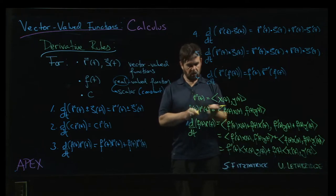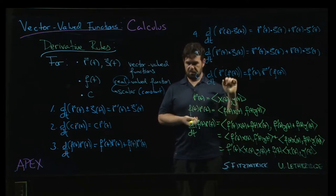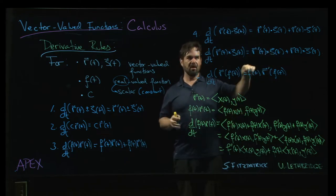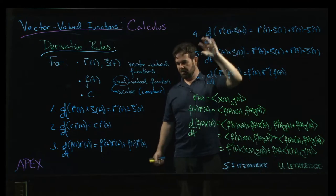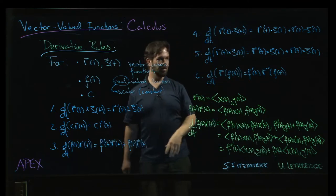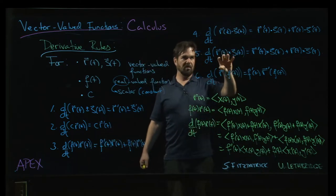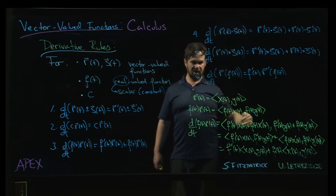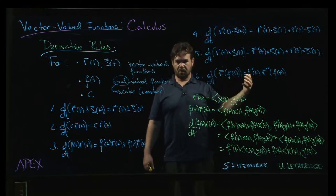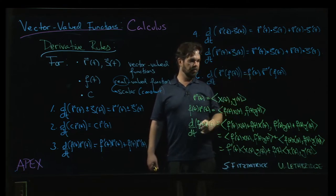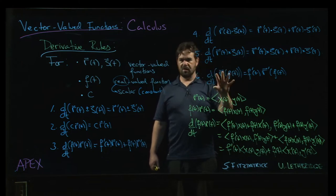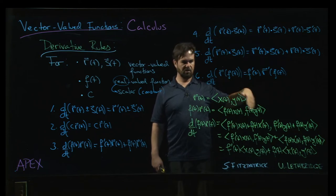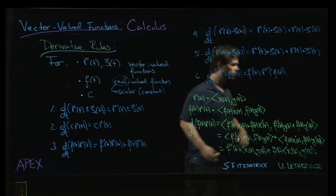The other two product rules follow basically the same procedure, with possibly slightly more detail. Because the dot product is slightly more complicated than a scalar multiple. And the cross product is definitely more complicated than the dot product. So each of these is going to be kind of the same idea with a few more steps in the calculation. The chain rule one is pretty straightforward. Again, it's just going to be the normal chain rule applied to each component in the vector valued function. And you'll see this one fall out as well.